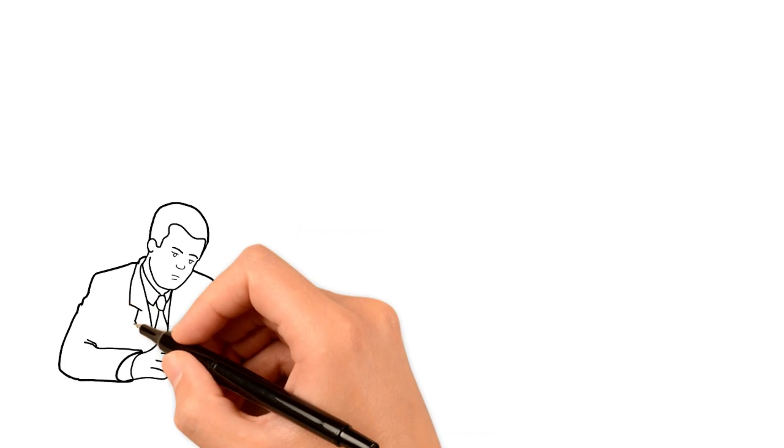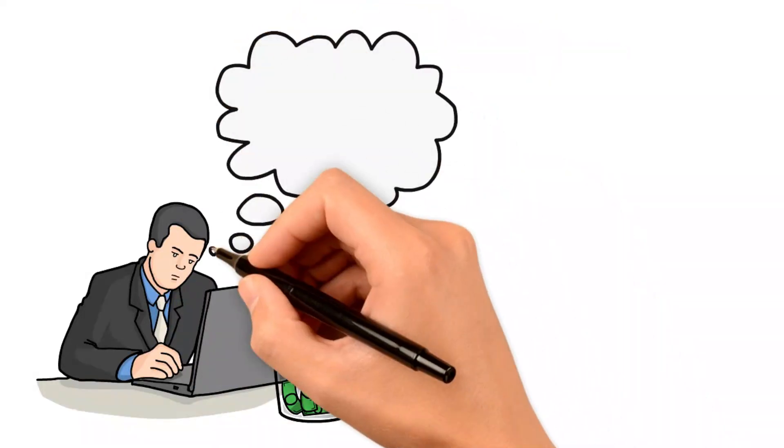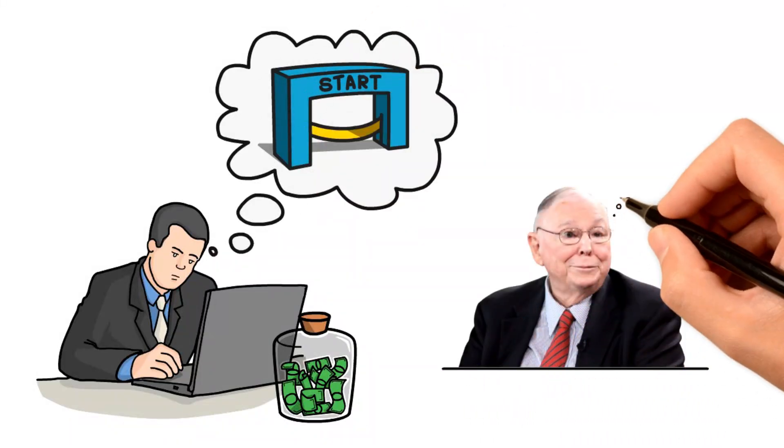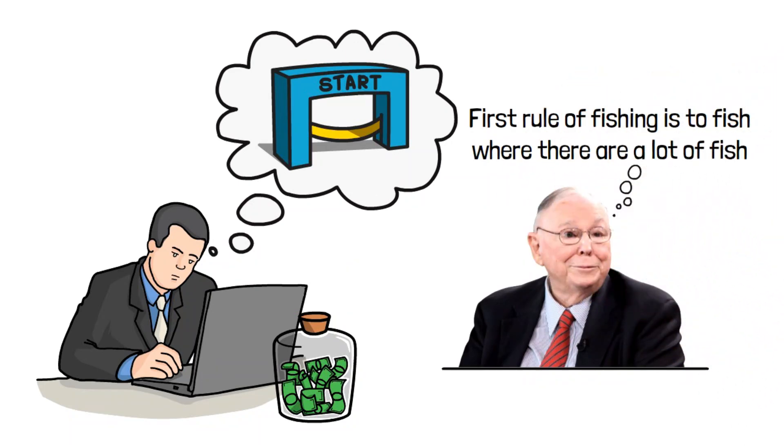The first step, which many people overlook and don't pay enough attention to, is to actively look for and start a simple business full of opportunities. As Munger says, the first rule of fishing is to fish where there are a lot of fish. If you want a big catch, you need to go where there are many fish.